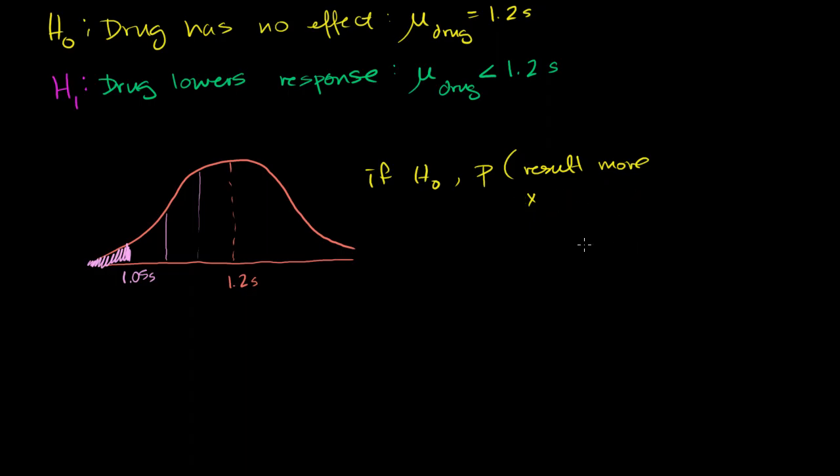Because in the last video, we cared about more extreme, because even a really high result would have said, okay, the mean's definitely not 1.2 seconds. But in this case, we care about means that are lower. So a result, so now we care about the probability of a result lower than 1.05 seconds.